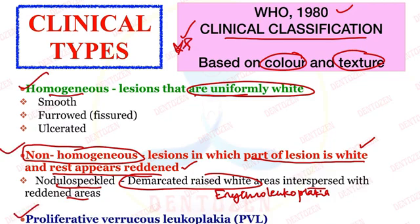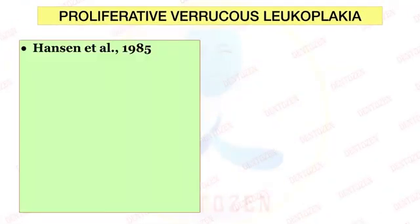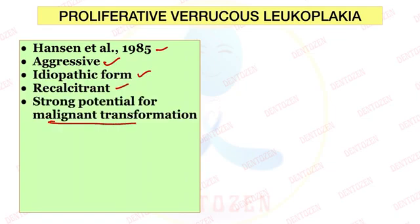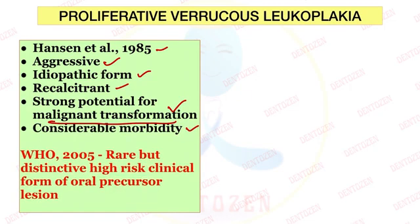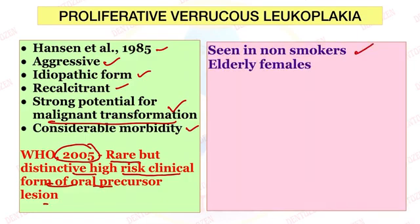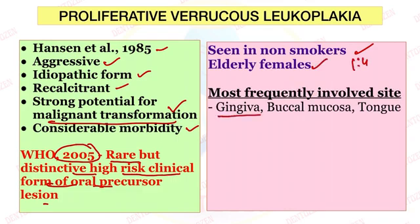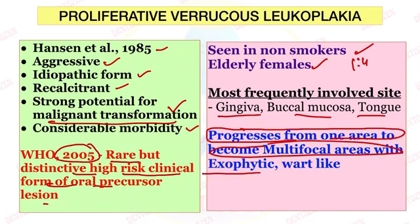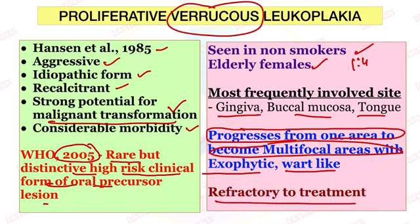Another type is Proliferative Verrucous Leukoplakia (PVL), first described by Hansen et al. in 1984. It is an aggressive, idiopathic form with recalcitrant behavior and strong potential for malignant transformation, with considerable morbidity. WHO in 2005 defined it as a rare but distinctive high-risk clinical form of oral precancerous lesion. PVL is seen in non-smokers, more commonly in elderly females (male to female ratio 1:4). It most frequently involves the gingiva, buccal mucosa, and tongue. It starts in one area but progresses to become multifocal, with an exophytic or wart-like appearance, and is refractory to treatment.